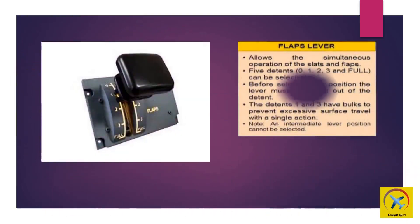The flaps lever allows the simultaneous operation of the slats and flaps. There are five detents: 0, 1, 2, 3, and full, which can be selected. Before selecting any position, the lever must be pulled out of the detent. Detents 1 and 3 have bulks to prevent excessive surface travel with a single action. There is an intermediate lever position which cannot be selected.